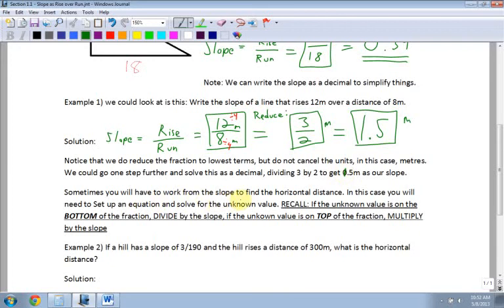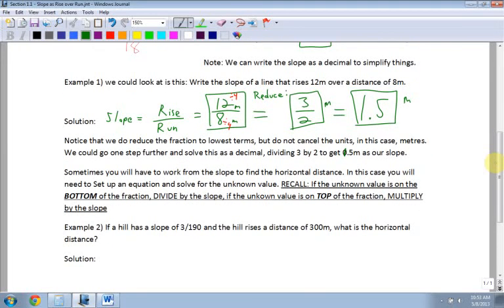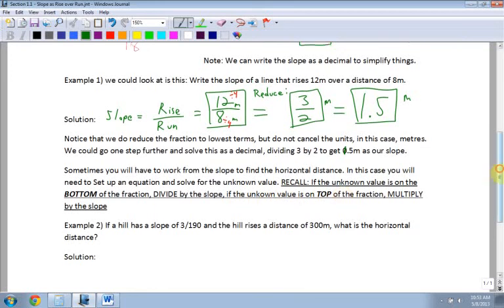Sometimes you'll have to work from the slope to find horizontal distance. Now we'll do a little bit of algebra. In this case, you will need to set up an equation and solve for the unknown value. Recall, if the unknown value is on the bottom of a fraction, we divide by the slope. If the unknown value is on the top, then we multiply. Well, what do I mean by that? Well, let's see.